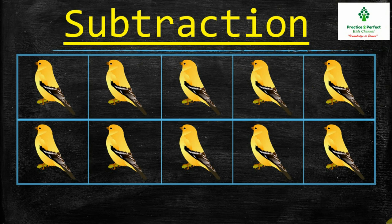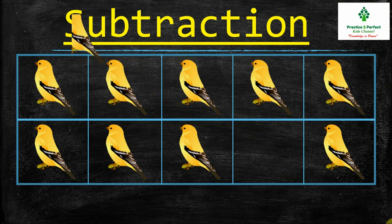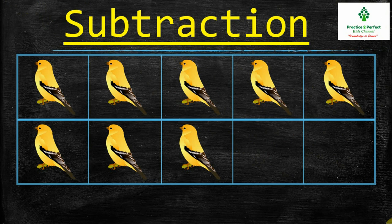So since 2 birds flew away, we will strike out or remove 2 birds, and now I will count the remaining birds. So let me count: 1, 2, 3, 4, 5, 6, 7, 8. So first I had 10 birds, and since 2 birds flew away, I subtracted 2 birds. So 10 minus 2 is equal to 8.